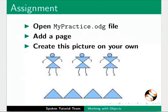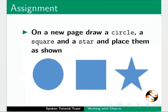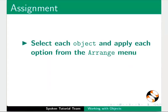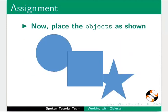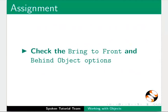Here is an assignment for you. Open mypractice.odg file and add a page. Create this picture on your own — on a new page draw a circle, a square and a star and place them as shown. Select each object and apply each option from the Arrange menu. Check how the placements of objects change for each option, then place the objects as shown and check the bring to front and behind object options.